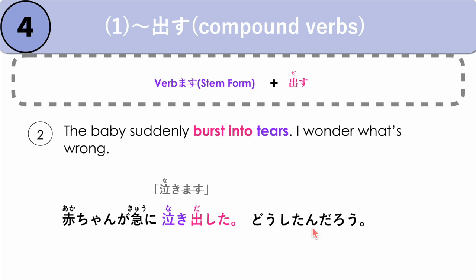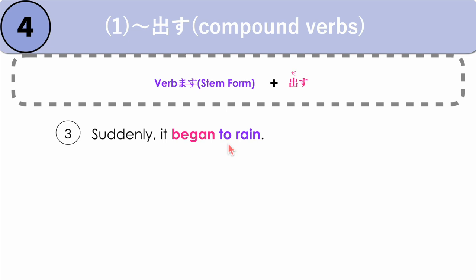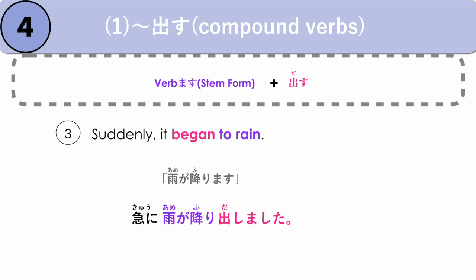Next example: suddenly it began to rain. We say kyuu ni — suddenly — our verb is to rain, which is ame ga furimasu. We get the stem: ame ga furi, plus dasimashita. So we use the formal form. Instead of dashita, we can say dasimashita. Kyuu ni, ame ga furi dashimashita.